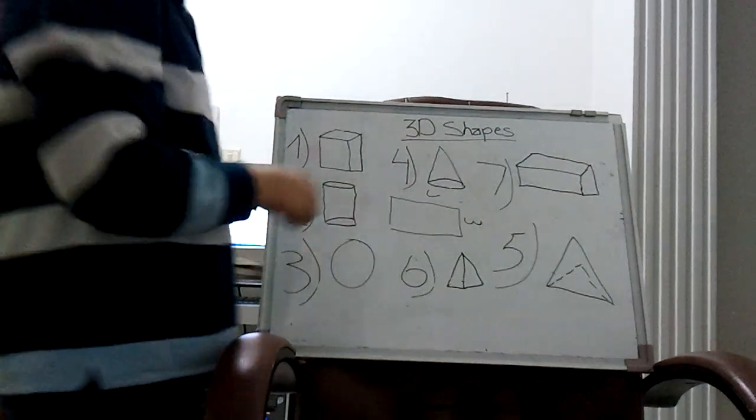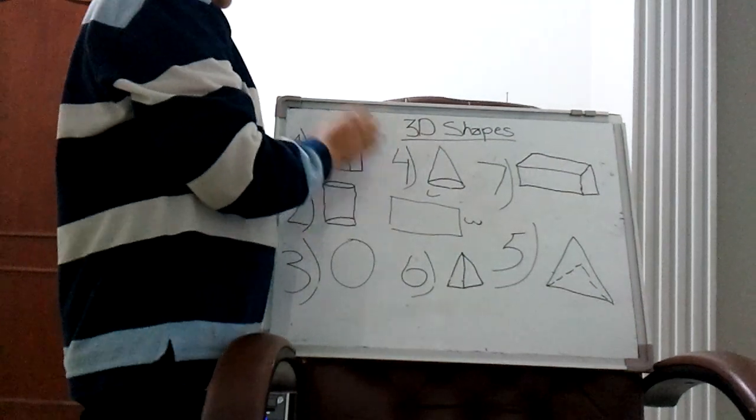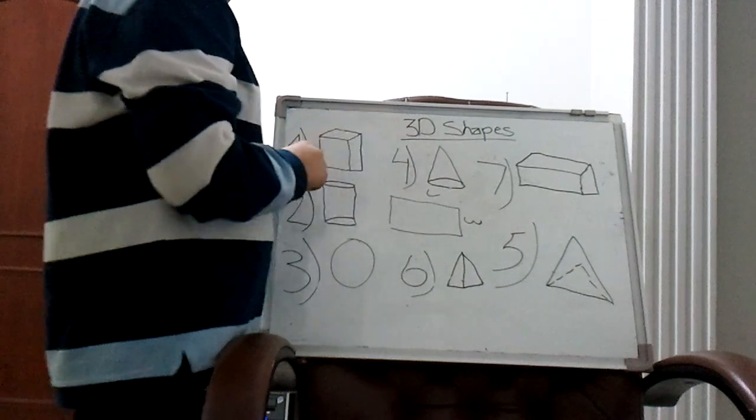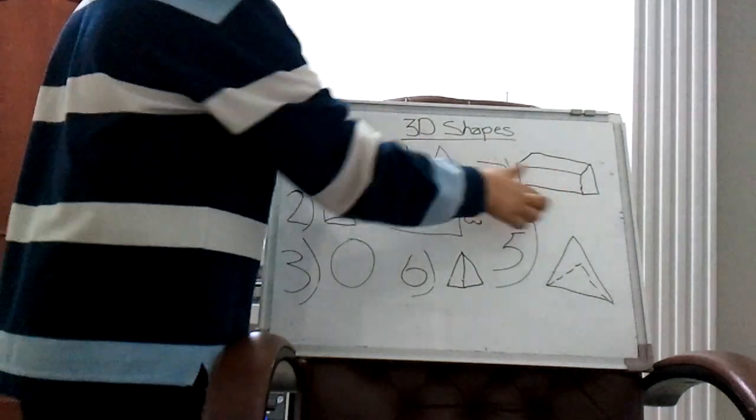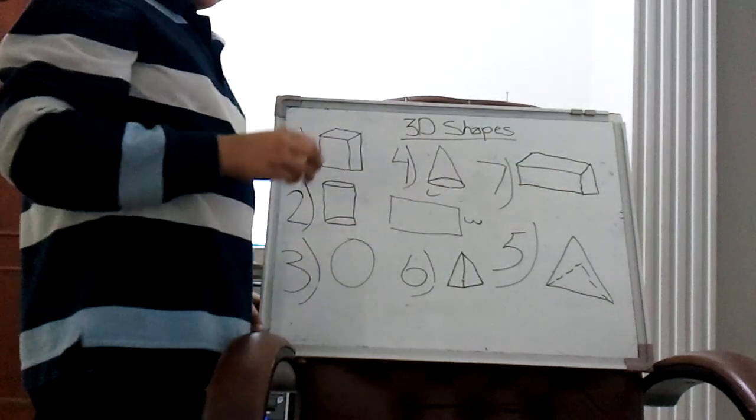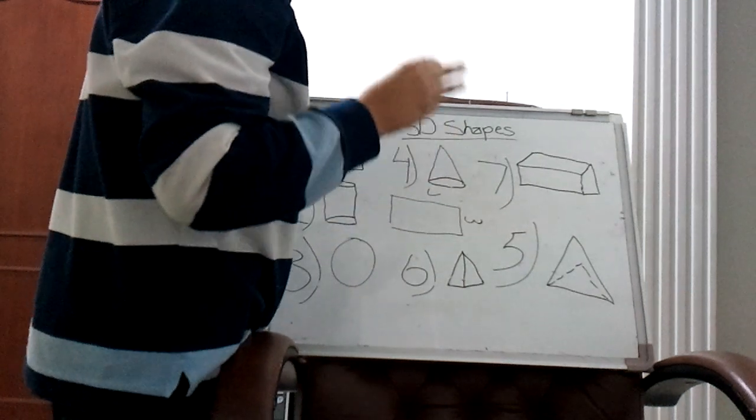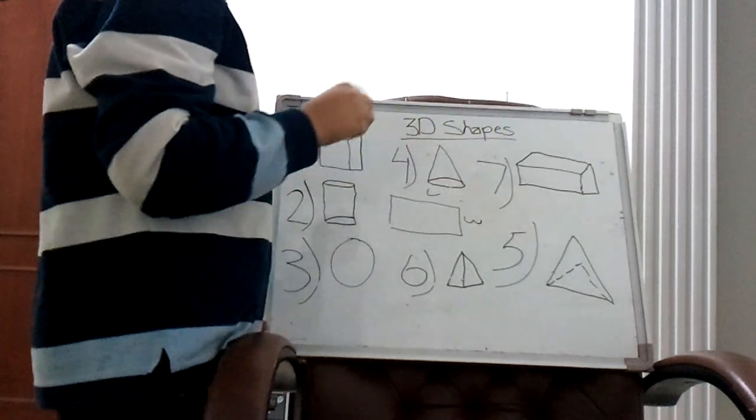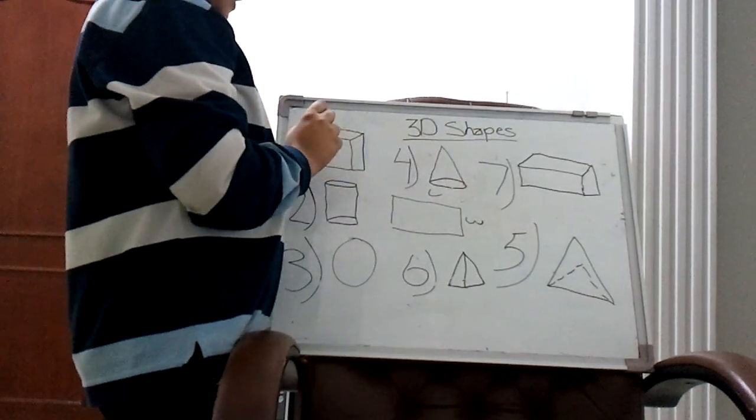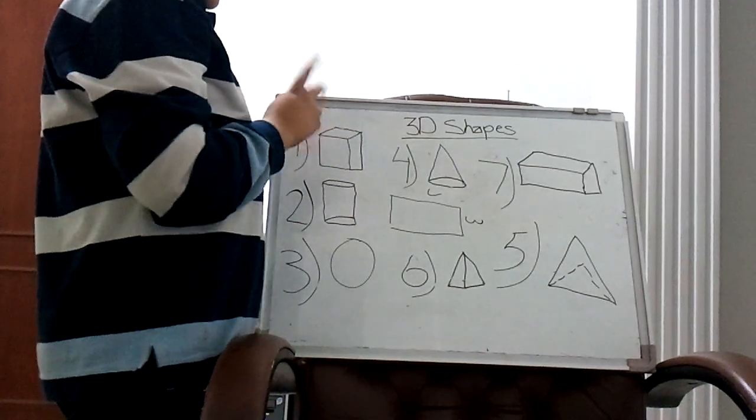Hey guys, so here is another lesson for you: 3D shapes. So we have some examples and I will explain. 3D shapes have three features with them: vertices, edges, and faces. So let me tell you all about them.